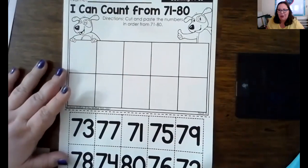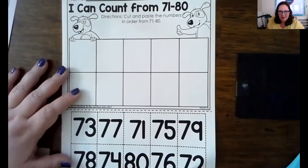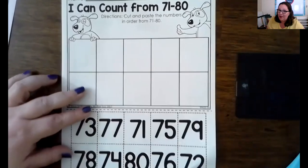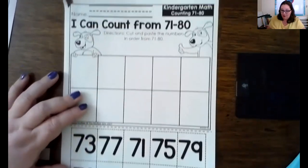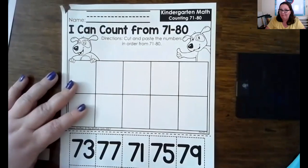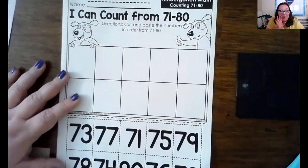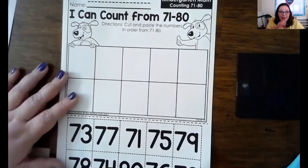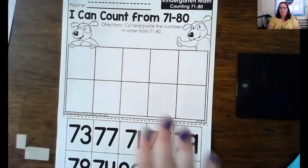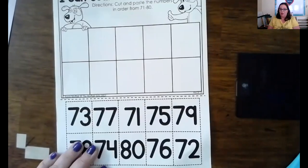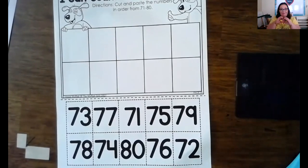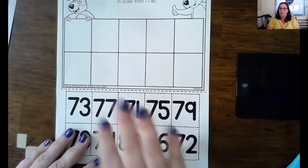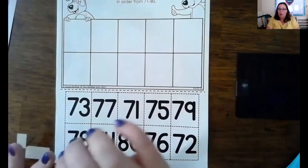You know what? I want to challenge you smart cookies. And you're going to try this one on your own. Your number is 71 through 80. You got this. Because this one is twice. You got this. You got this. All right. So you can pause and do this now. Or finish it after the video. Okay.